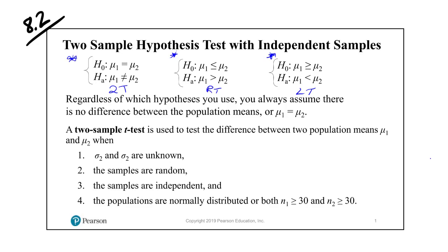Just like with the one-sample test, the assumption in the hypothesis test is going to be that equality exists. Before, in the one-sample case, we assumed the mean takes on some value — that's why the equals is in the null hypothesis. Same thing here: regardless of which hypothesis test you use, you always assume there is no difference between the population means, that μ1 equals μ2, and then you make your results based on what you find.